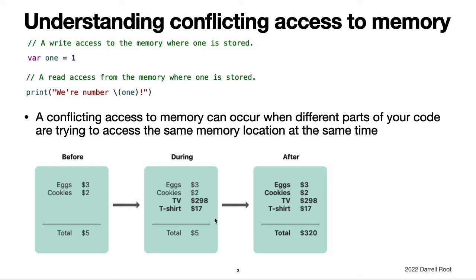This example also demonstrates a challenge you may encounter when fixing conflicting access to memory. There are sometimes multiple ways to fix the conflict that produce different answers, and it is not always obvious which answer is correct. In this example, depending on whether you wanted the original total amount or the updated total amount, either $5 or $320 would be the correct answer. Before you can fix the conflicting access, you have to determine what it was intended to do.